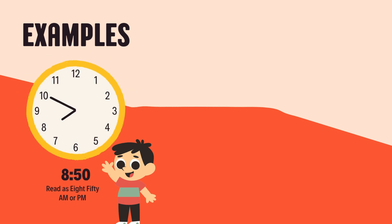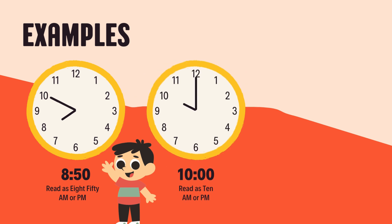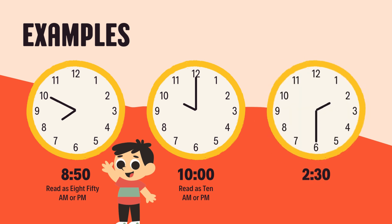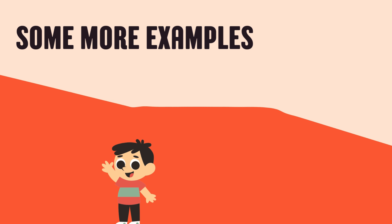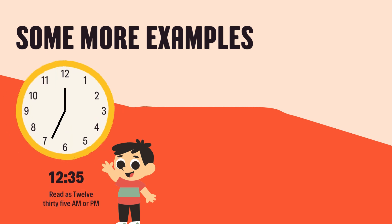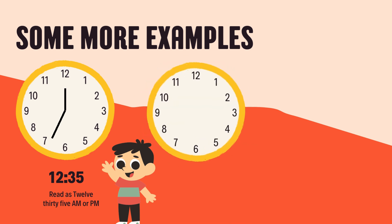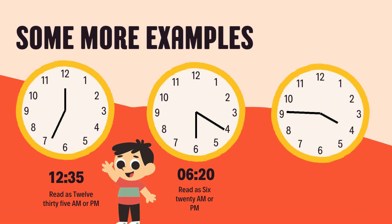Let's look at some examples. The first one reads as 8:50 AM or PM. The second one reads as 10 AM or PM. The third one reads as 2:30 AM or PM. The next one reads as 12:35 AM or PM. The next reads as 6:20 AM or PM. The last one reads as 4:45 AM or PM.